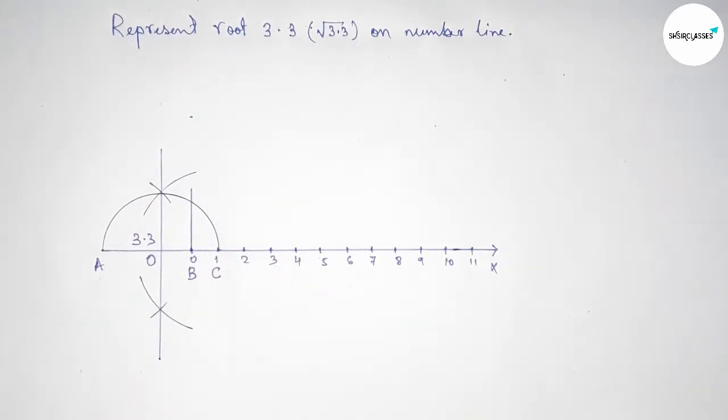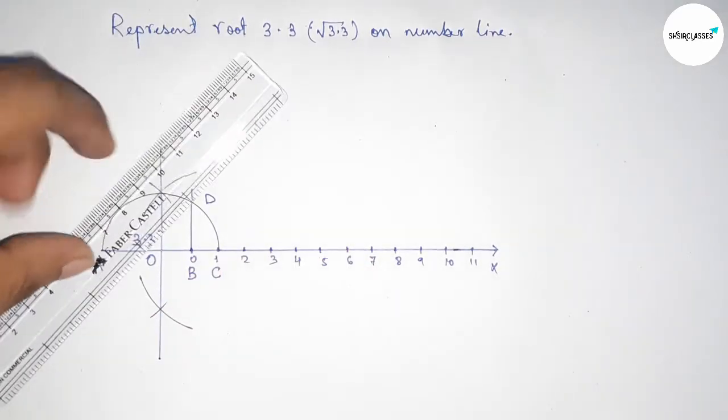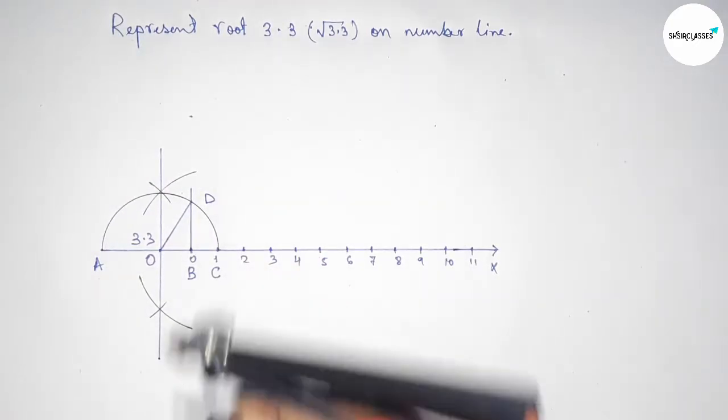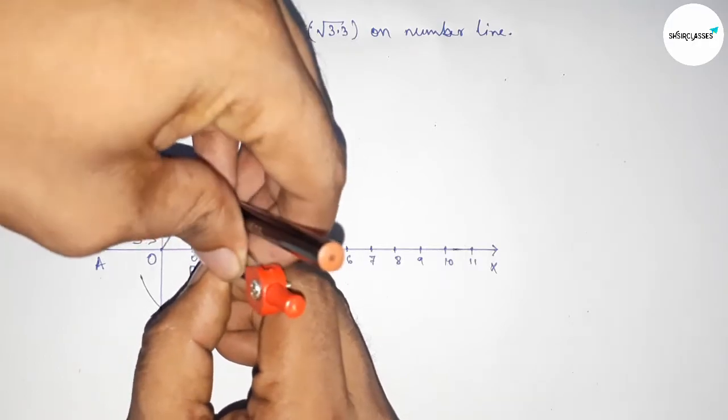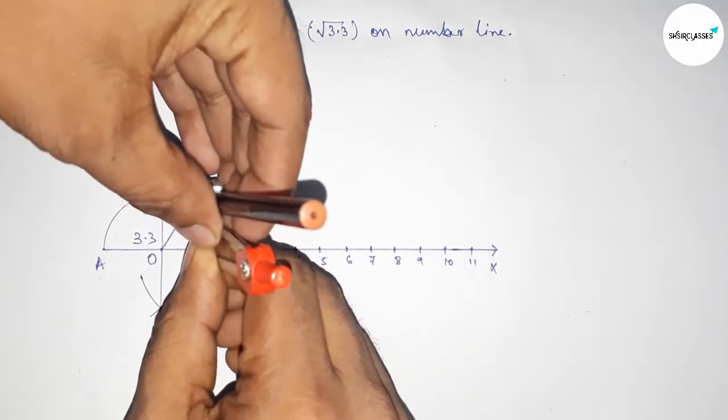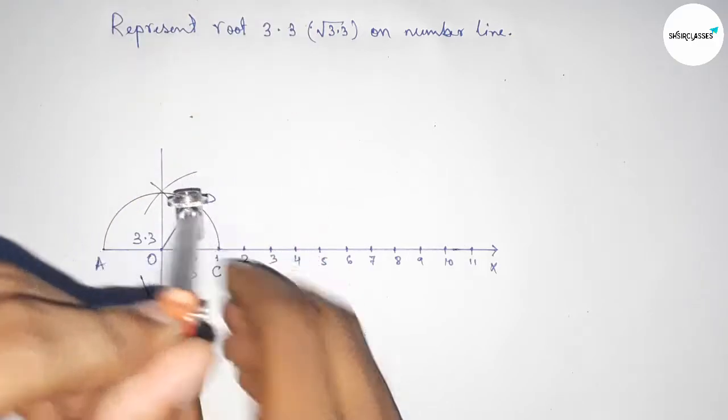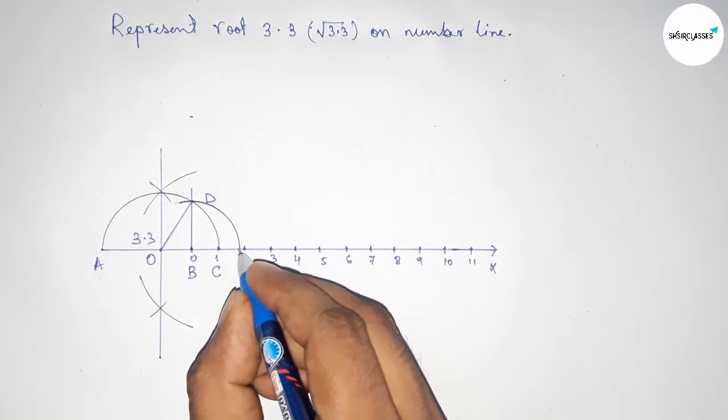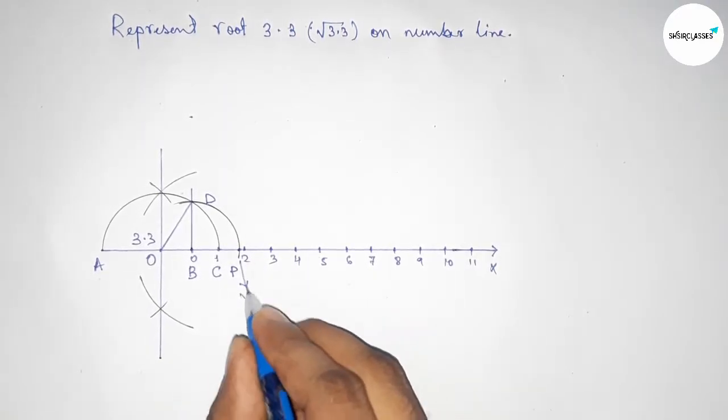Join this. Now take the distance BD with a compass and draw an arc which meets the number line at point P. So this is the representation of root 3.3 on the number line.